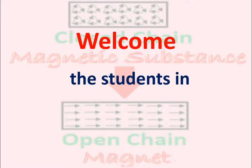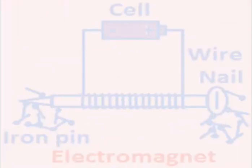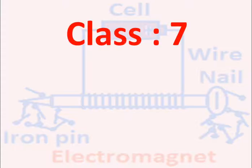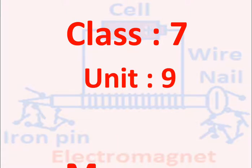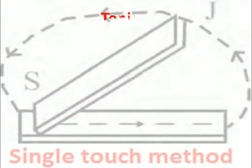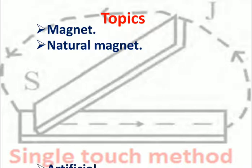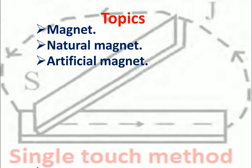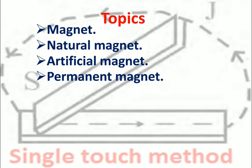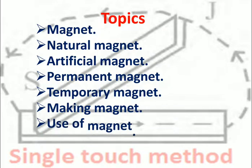Welcome students to science class, Class 7, Unit 9: Magnet. The topics covered are: Magnet, Natural Magnet, Artificial Magnet, Permanent Magnet, Temporary Magnet, Making Magnet, and Use of Magnet.